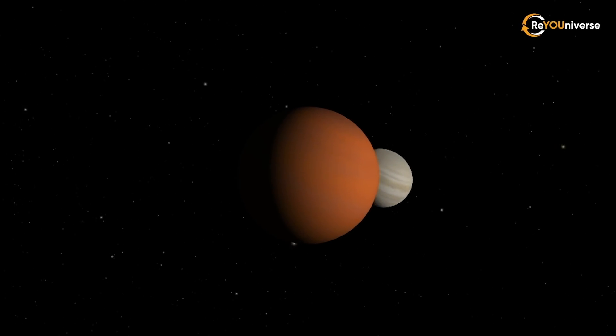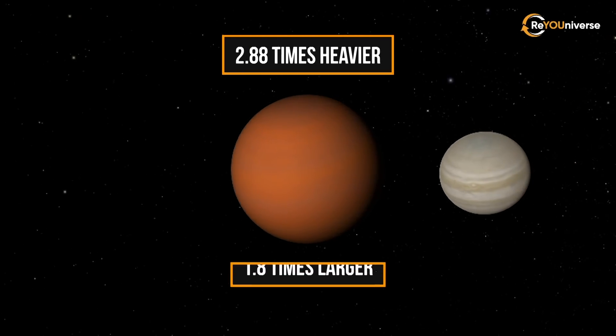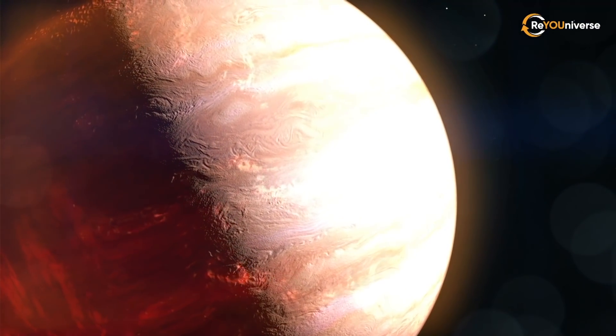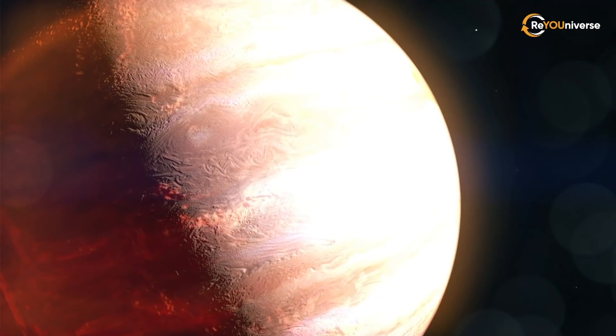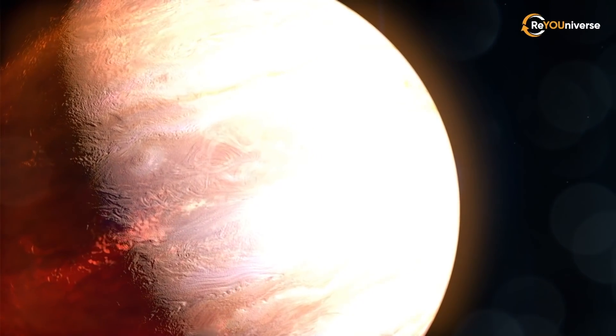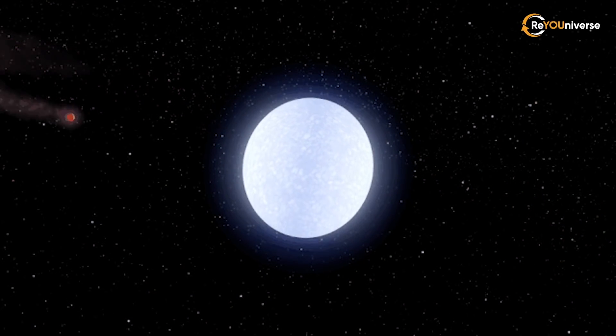The planet is 2.88 times heavier than Jupiter, and it's 1.8 times larger than Jupiter. Given that the planet's atmosphere is constantly blasted with high levels of ultraviolet radiation, the planet may even be shedding a tail of evaporated planetary material like a comet.